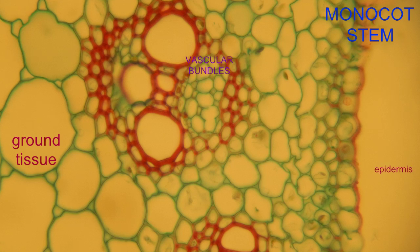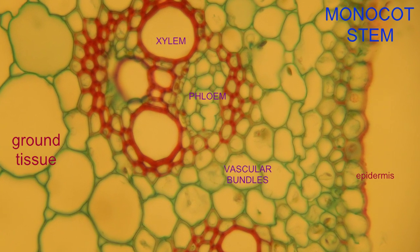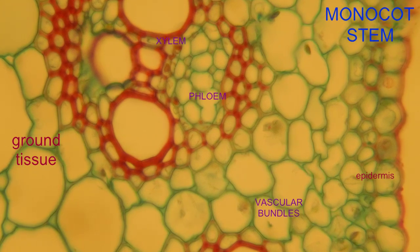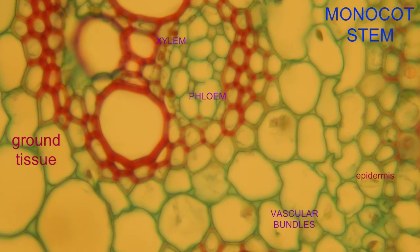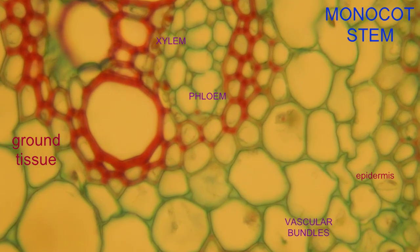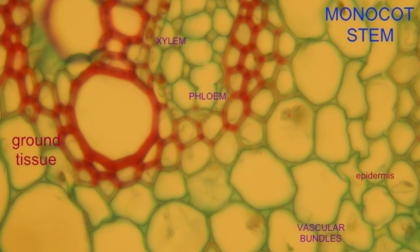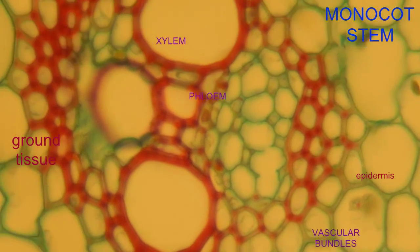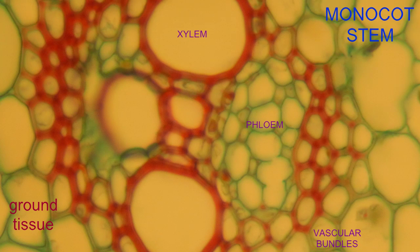Because there is no vascular cambium, no lateral meristem, there is no secondary growth which occurs in monocots.